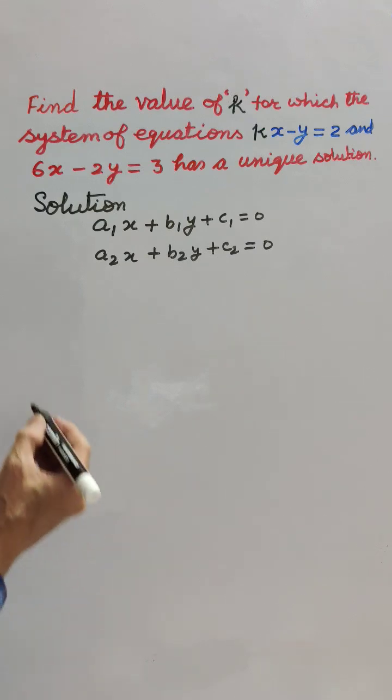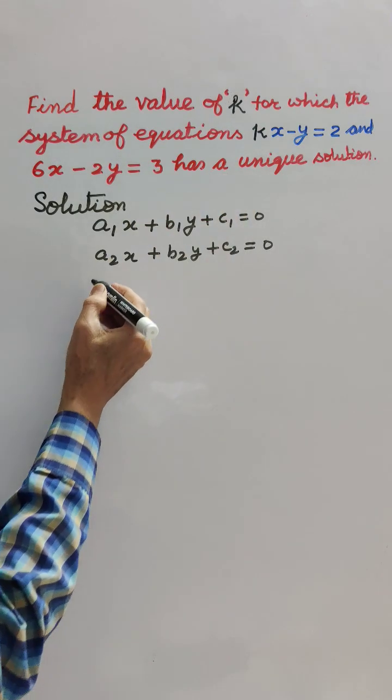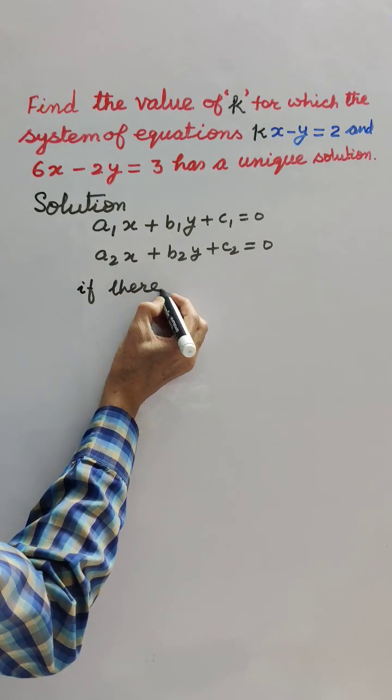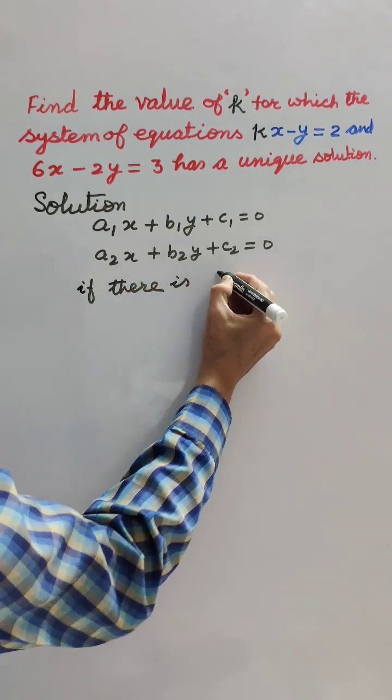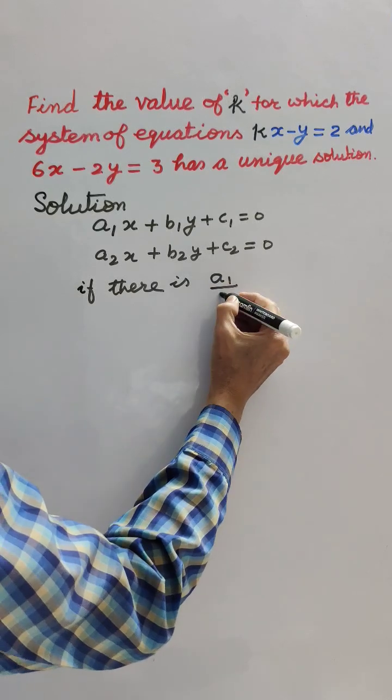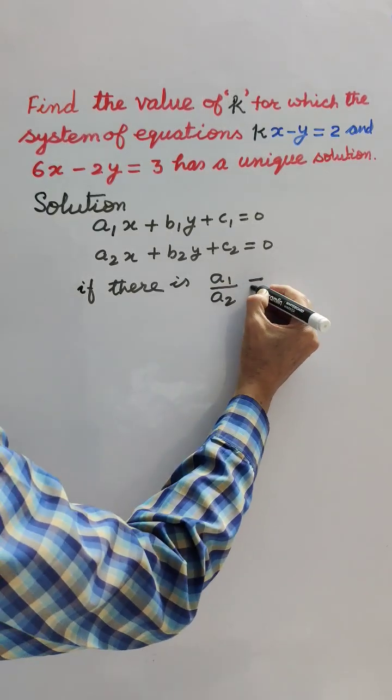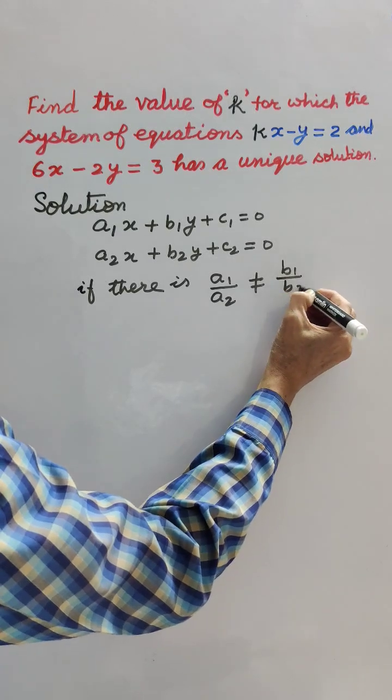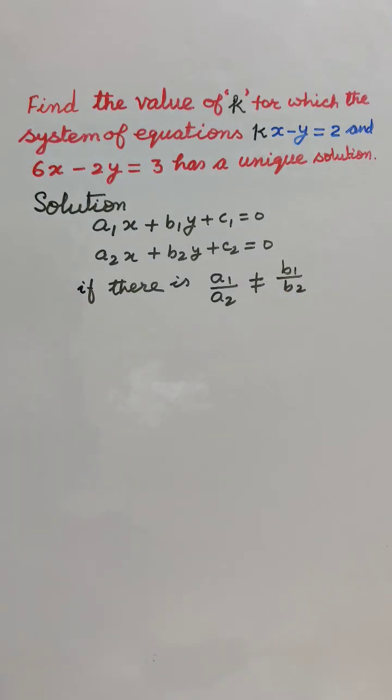The condition for unique solution is if a1 upon a2 is not equal to b1 upon b2, then there is a unique solution.